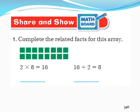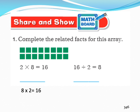Now please open your books on page 346. Share and show. Complete the related facts for this array. How many columns does it have? 8 columns. And how many rows? 2 rows. 2 multiplied by 8 equals 16. Do you remember the commutative property of multiplication? Let's change the order of the factors: 8 multiplied by 2 equals 16. 16 divided by 2 equals 8, and 16 divided by 8 equals 2.